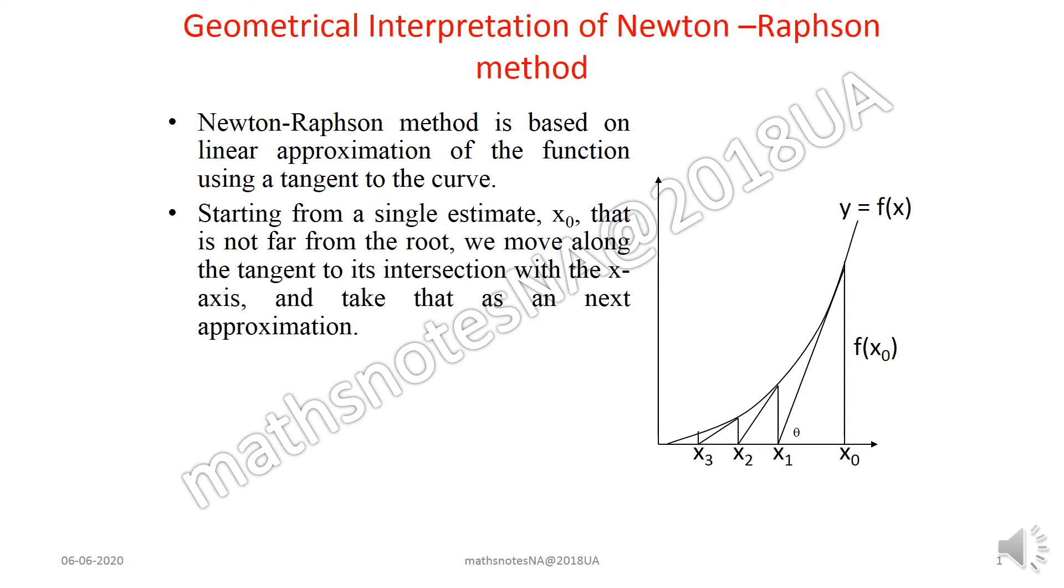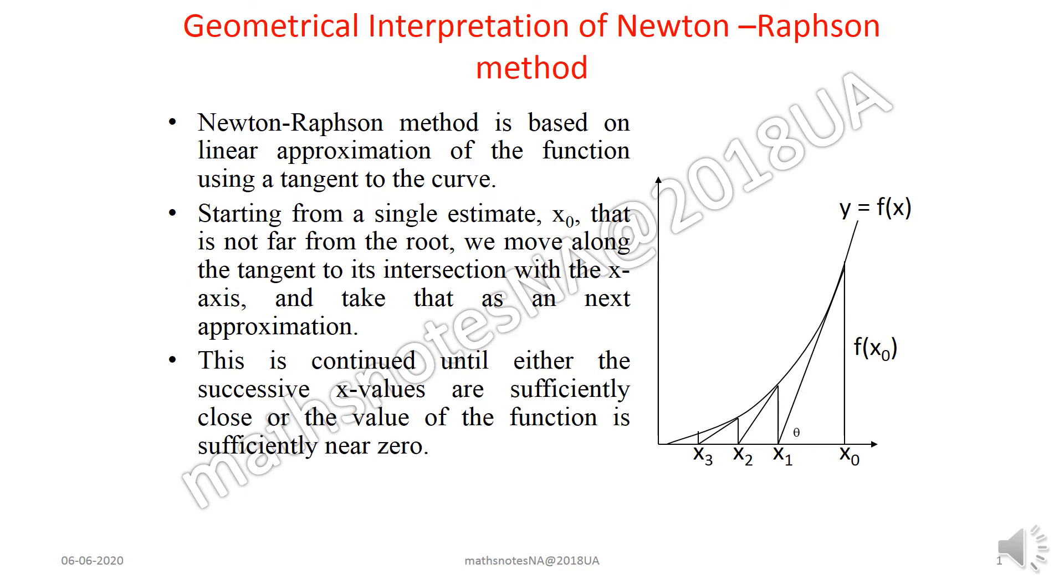Starting from a single estimate x₀ that is not far from the root, we move along the tangent to its intersection with the x-axis and take that as the next approximation. This is continued until either the successive x values are sufficiently close or the value of the function is sufficiently near zero.